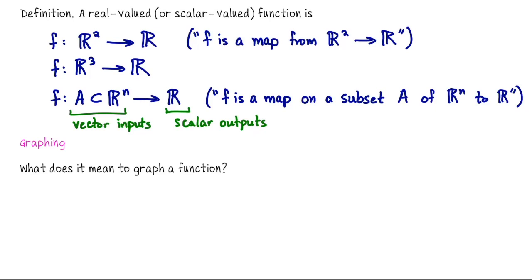This is the opposite of the type of functions we were just looking at when we had curves. For parametric curves, we plugged in a scalar t and the output was a vector. Here we're going to be plugging in multiple variables, and the values we get out of the function are scalars.